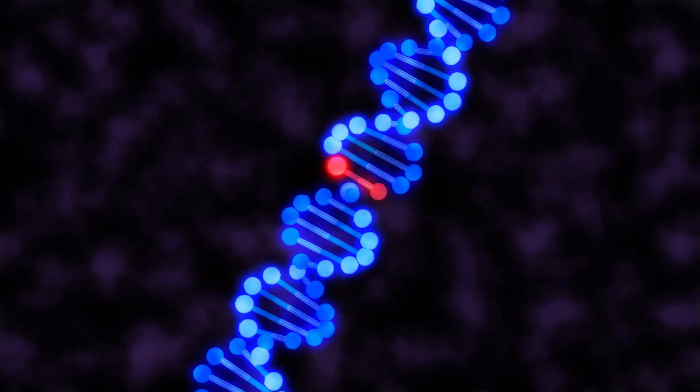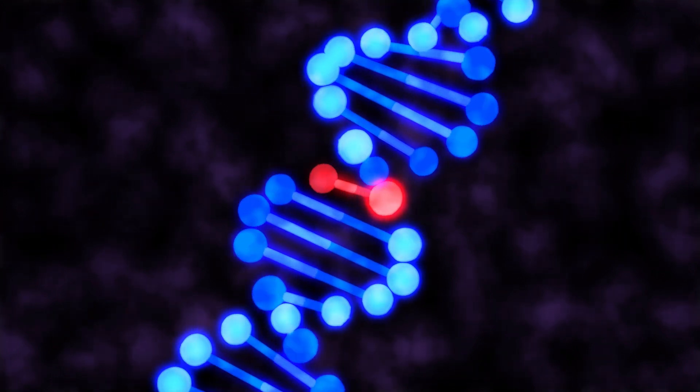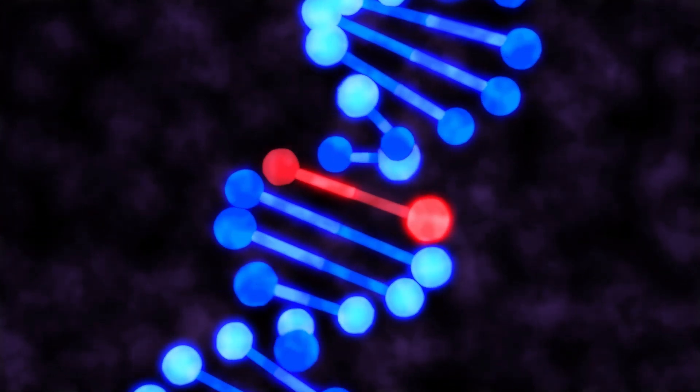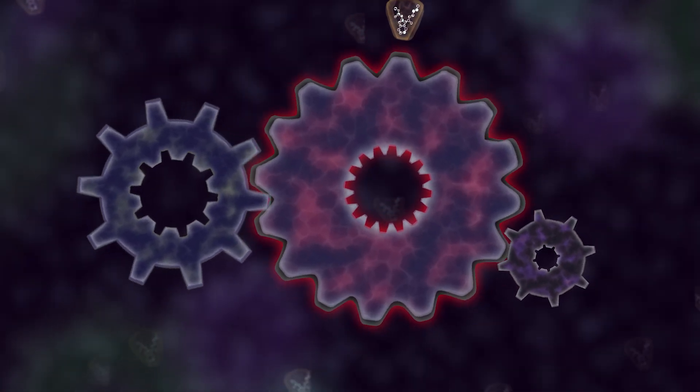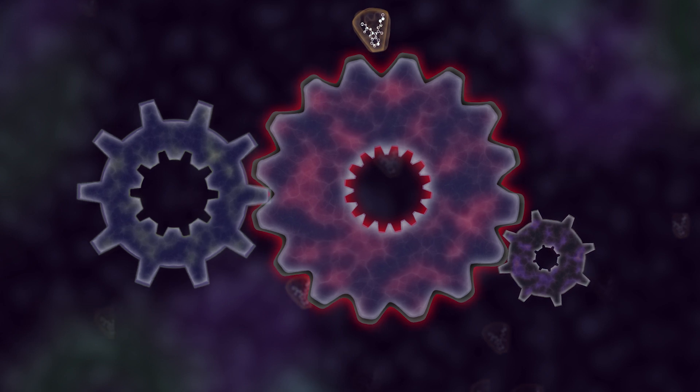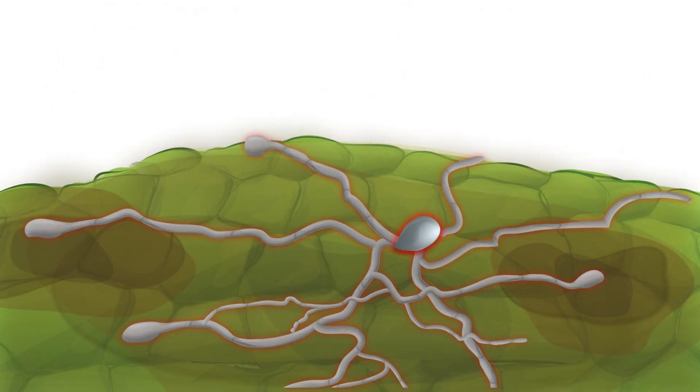Deep inside the resistant spore, the DNA sequence is different. This tiny difference in DNA sequence results in a protein that is shaped differently, and the fungicide can no longer bind. The protein continues working, though it may not perform as well, and the fungus is not killed.